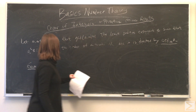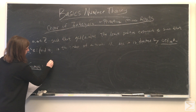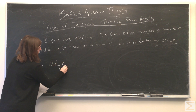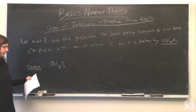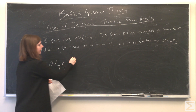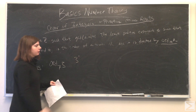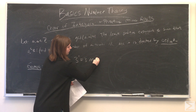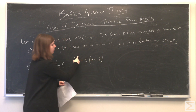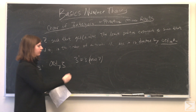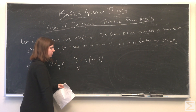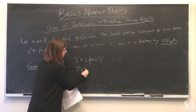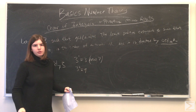For some examples, if we have to find the order of 3 modulo 7, we start off: 3 to the first is 3, and that's congruent to 3 mod 7. We move on to the next exponent, 2. 3 squared is 9, and that's congruent to 2 modulo 7.